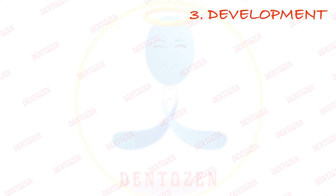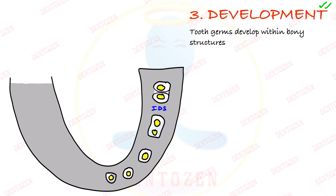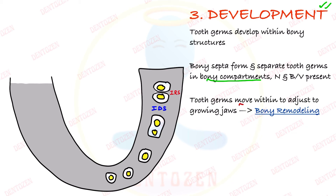Alveolar bone cannot develop without teeth. It starts developing when tooth germs begin developing within the bones of maxilla and mandible. Bones form between these teeth germs and divide them into compartments — bony septa form and divide them into sections. Within these bony compartments there are nerves and blood vessels. As the jaws grow, the tooth germs start moving, causing bony remodeling — both formation and resorption of bone — by which the bone becomes adapted around the tooth germs and the alveolar process forms.